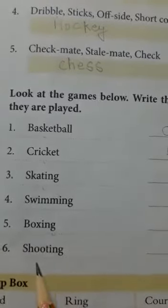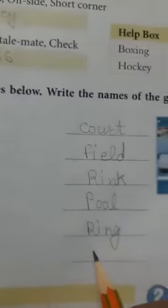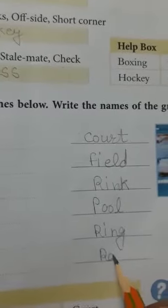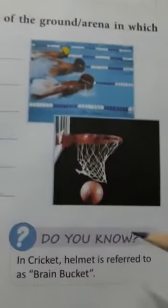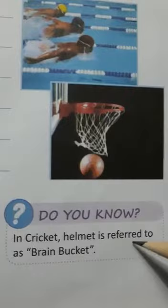Next is boxing - boxing is done in a ring. And last, shooting - shooting relates to range. Now here we are having an interesting fact: in cricket, the helmet is referred to as brain bucket. We see that cricketers always use a helmet and it is referred to as brain bucket - such an interesting fact!